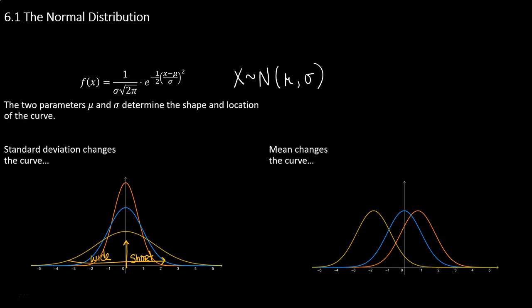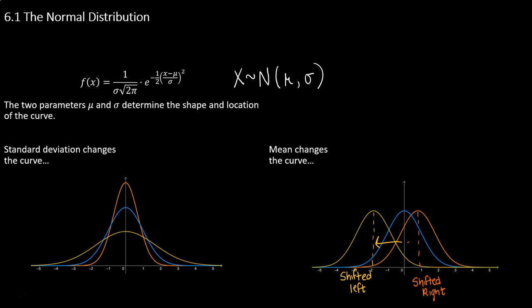If I were to do the opposite and pick a smaller standard deviation, my curve would become taller and more narrow. The mean changes the curve in a different way — it doesn't change the shape of the curve at all, it just changes the location. If I have a data set centered at negative 2, my curve would appear shifted left compared to the standard normal. And if I have a mean at positive 1, my curve would appear shifted right. So the standard deviation changes the shape; the mean changes the location.